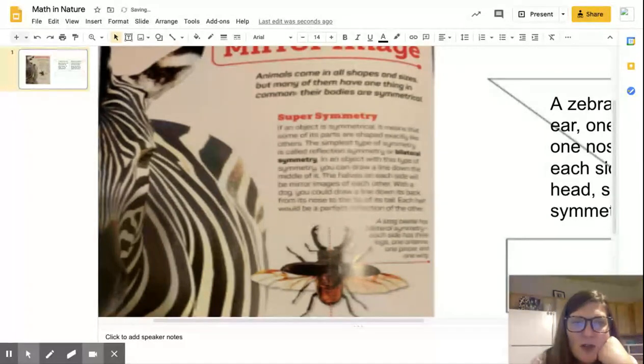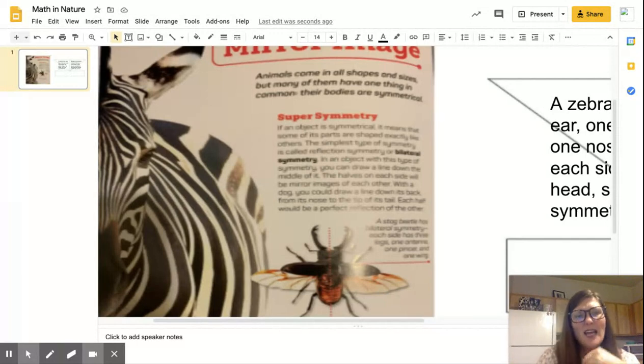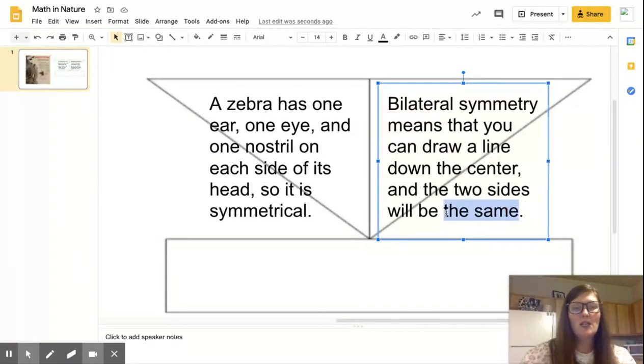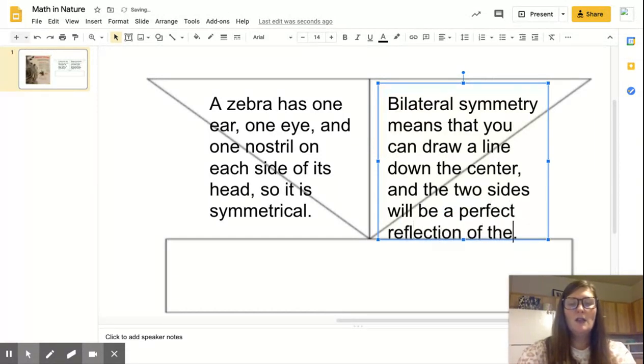The halves on each side will be mirror images of each other. With a dog, you could draw a line down its back from its nose to the tip of its tail. Each half would be perfect reflection of the other. I think I might add that. I think I said that, and the two sides will be the same. Maybe I should change it to a perfect reflection. I'm going to do that. A perfect reflection of the other.